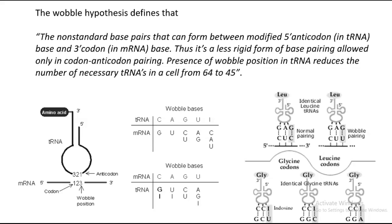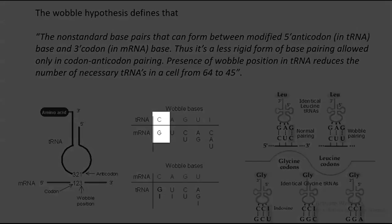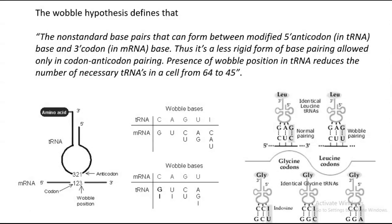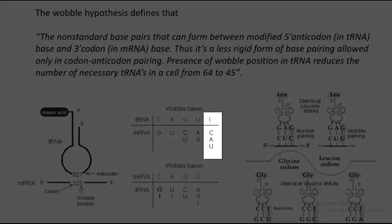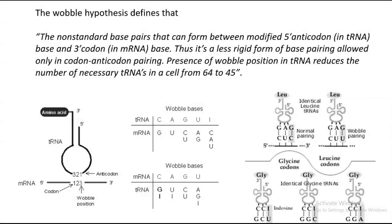For example, first we look at leucine. In the tRNA molecule, at the 5' end of the anticodon, you can have C, A, G, U, and I. For example, C of the anticodon can recognize G of the mRNA's codon — this is a normal kind of base pairing. Whereas, if an inosine — a modified form of a nitrogenous base — is present at the 5' anticodon end, it can recognize C, A, and U present in the mRNA. This kind of leniency allowed in base pairing is referred to as Wobble base pairing.